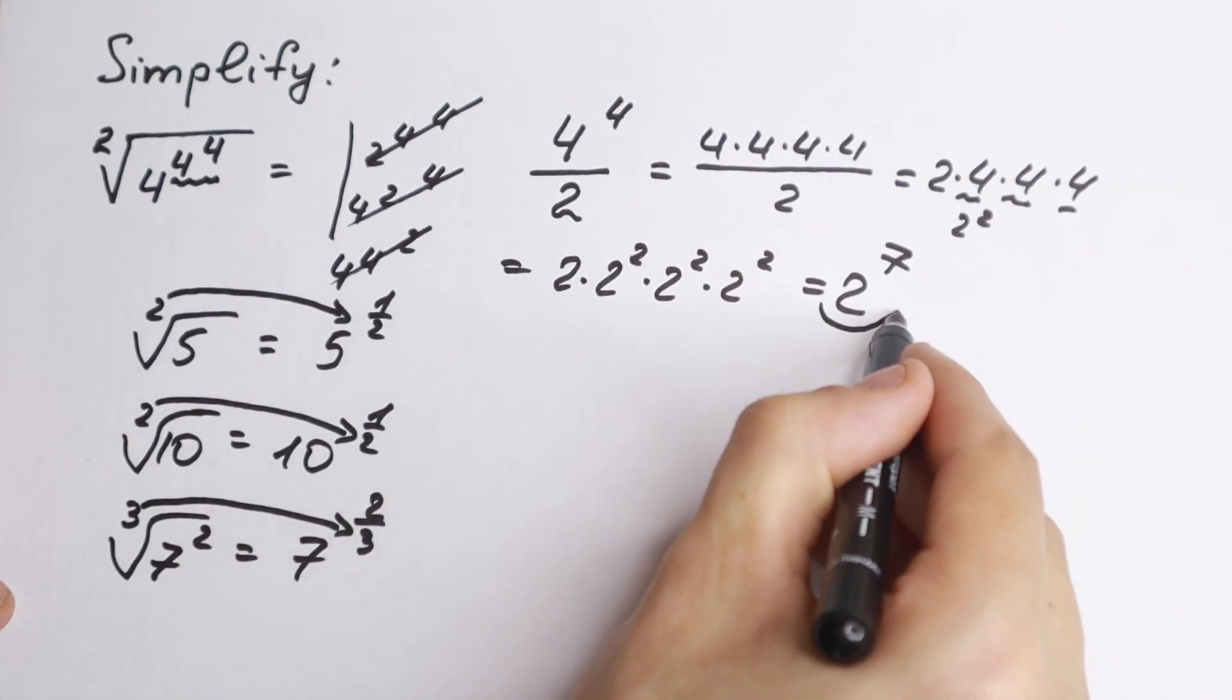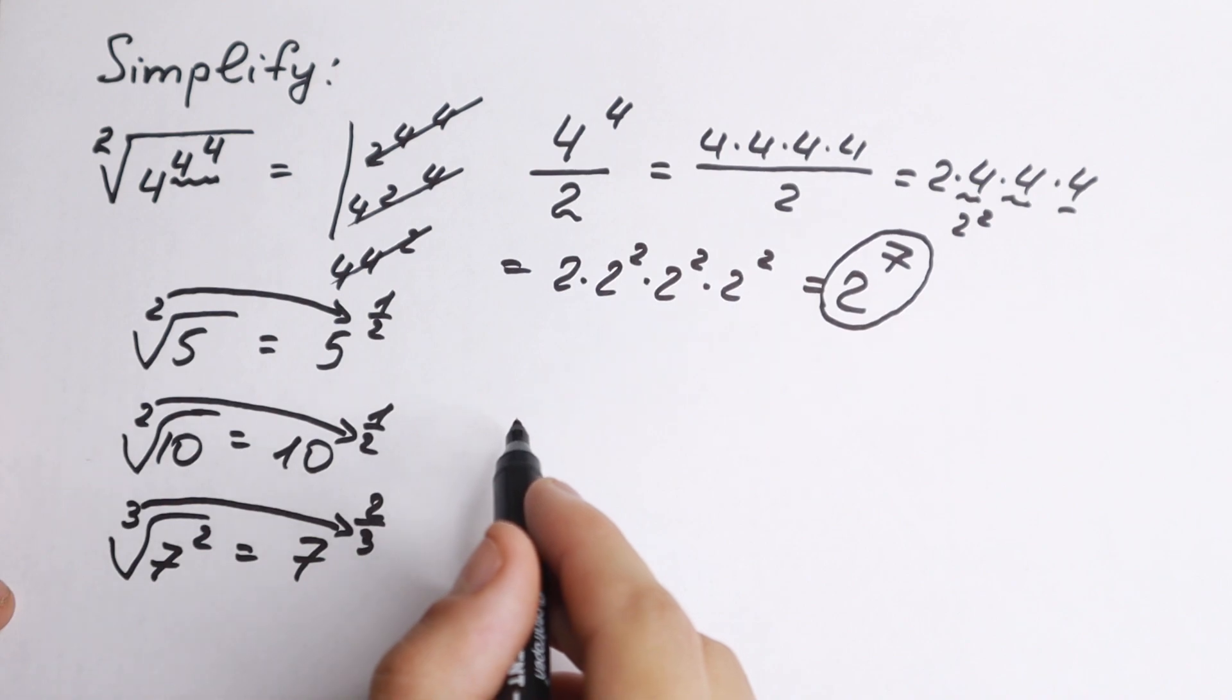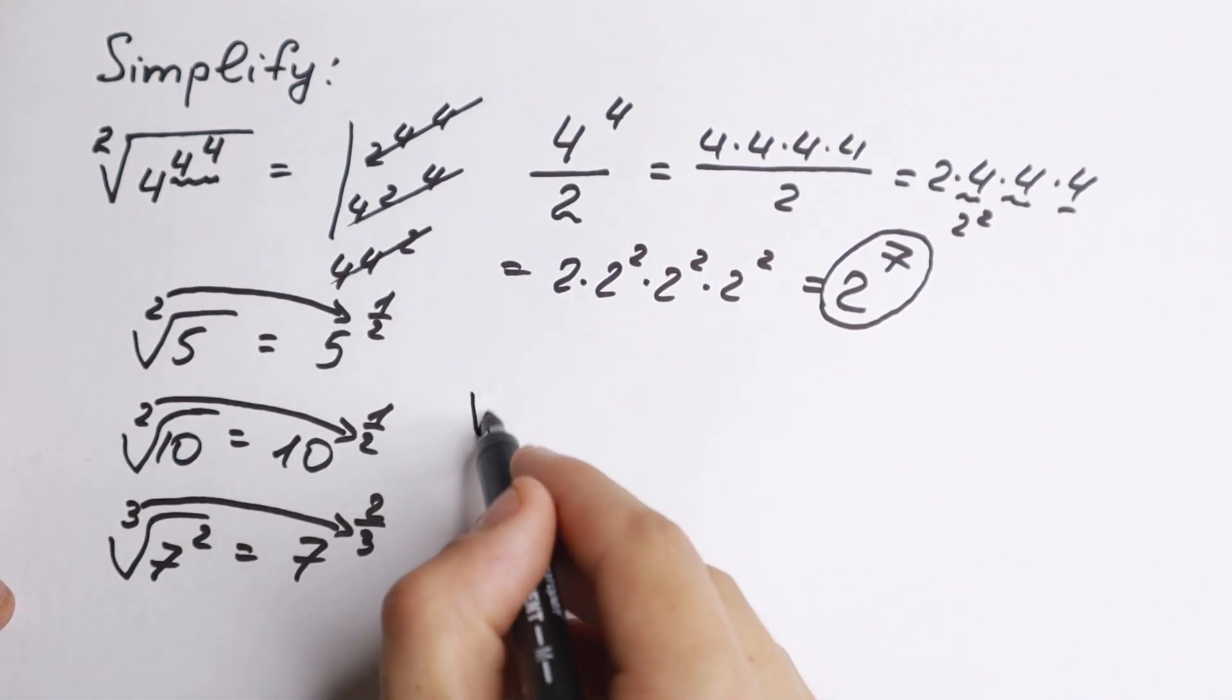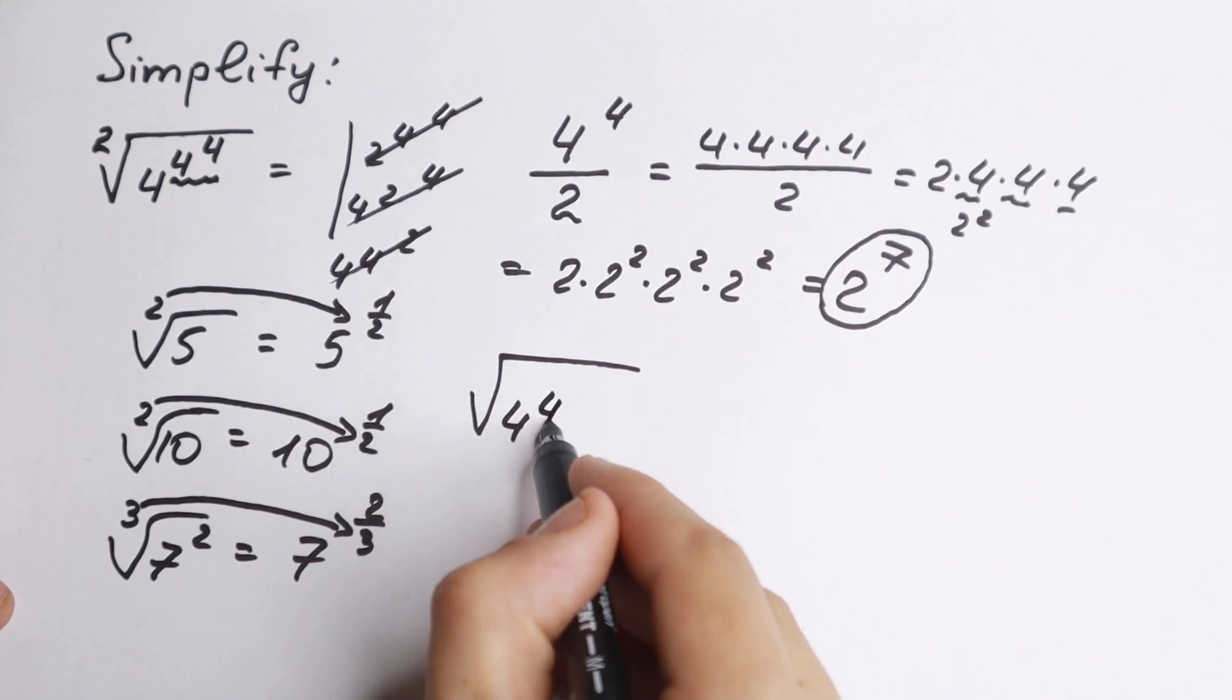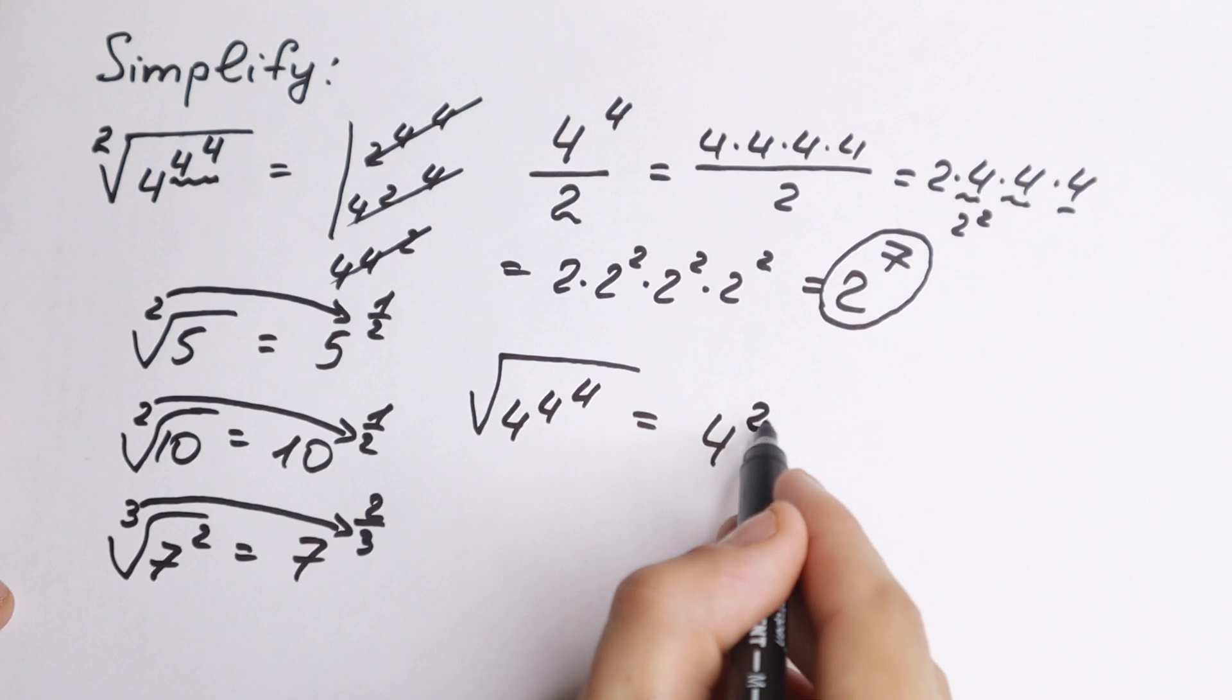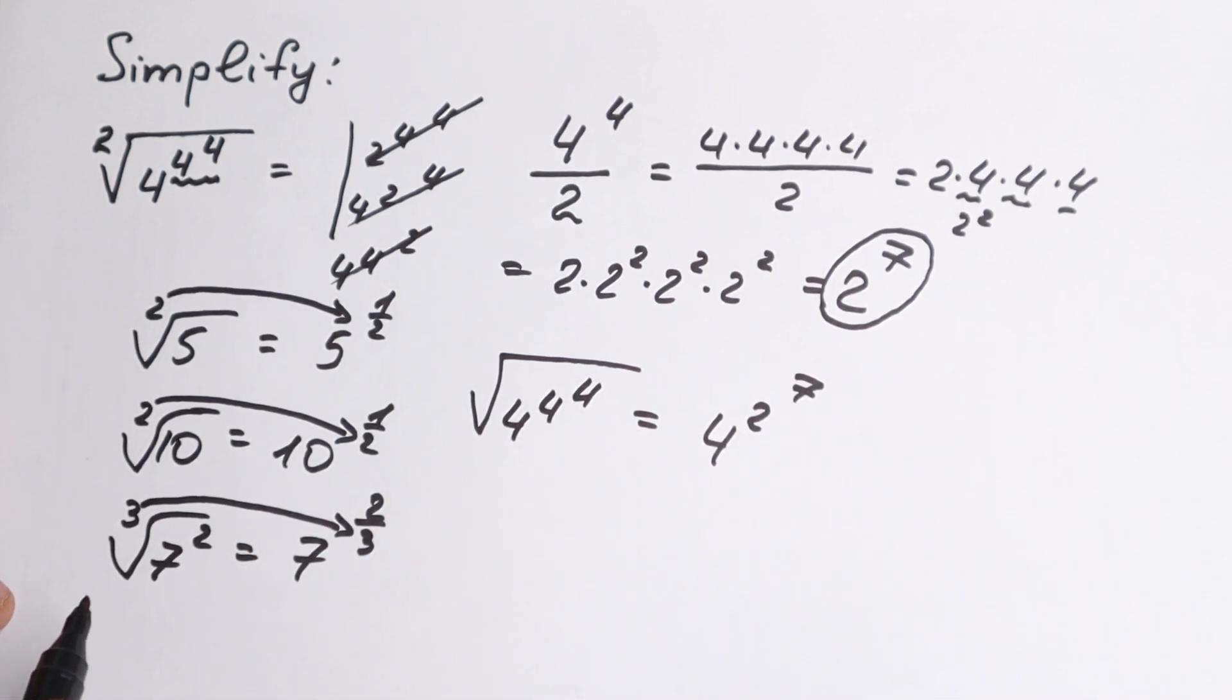As a result, this is only our power. But what about the final answer? We need to plug this in instead of the 4^4. So, the square root of 4^(4^4) equals 4^(2^7).